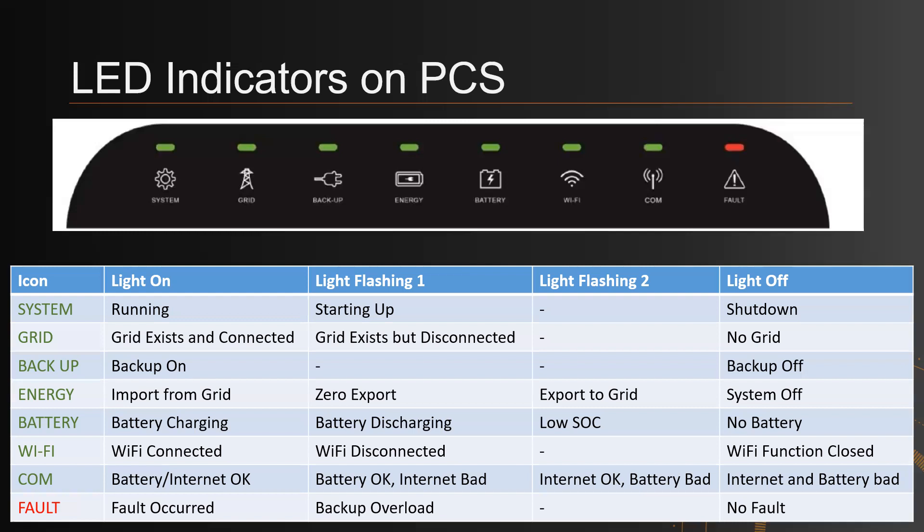For the Battery icon: on means the battery is charging; flashing means the battery is discharging; flashing quickly means you are in a low state of charge mode; off means no battery is detected. For the Wi-Fi symbol: solid means connected; flashing means Wi-Fi is disconnected; off means Wi-Fi functionality is disabled. For the COM (communication) icon: on means both battery and internet connection are good; flashing means battery connection is okay but no internet; flashing quickly means internet is connected but battery connection is not; off means both internet and battery connection are bad.